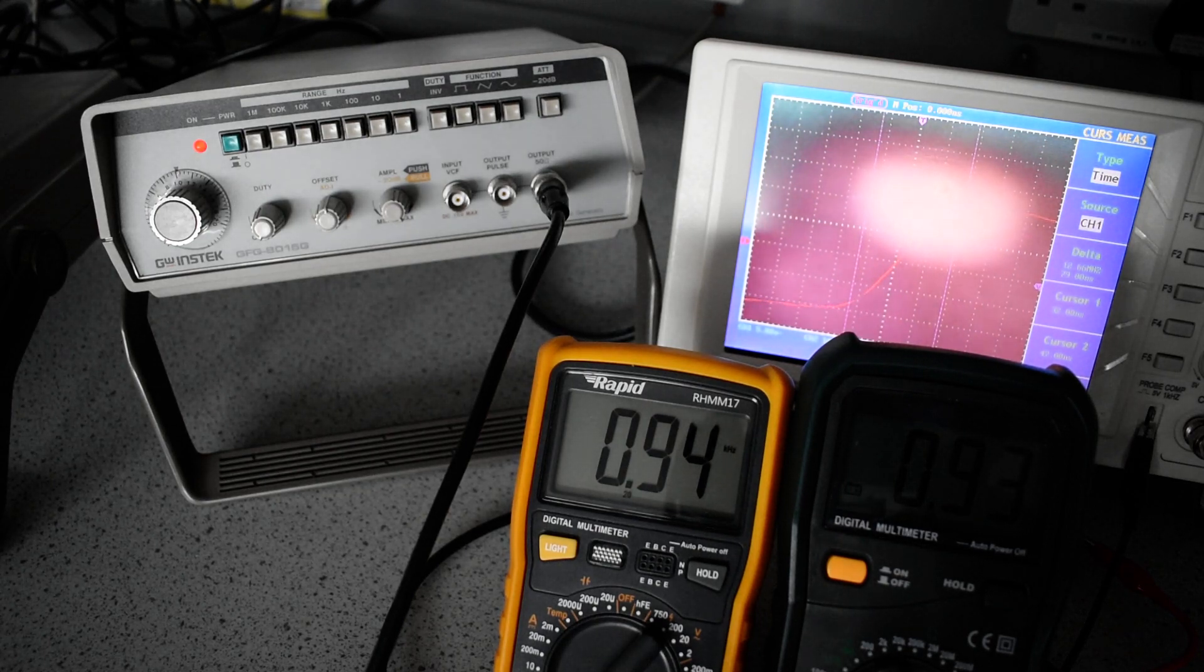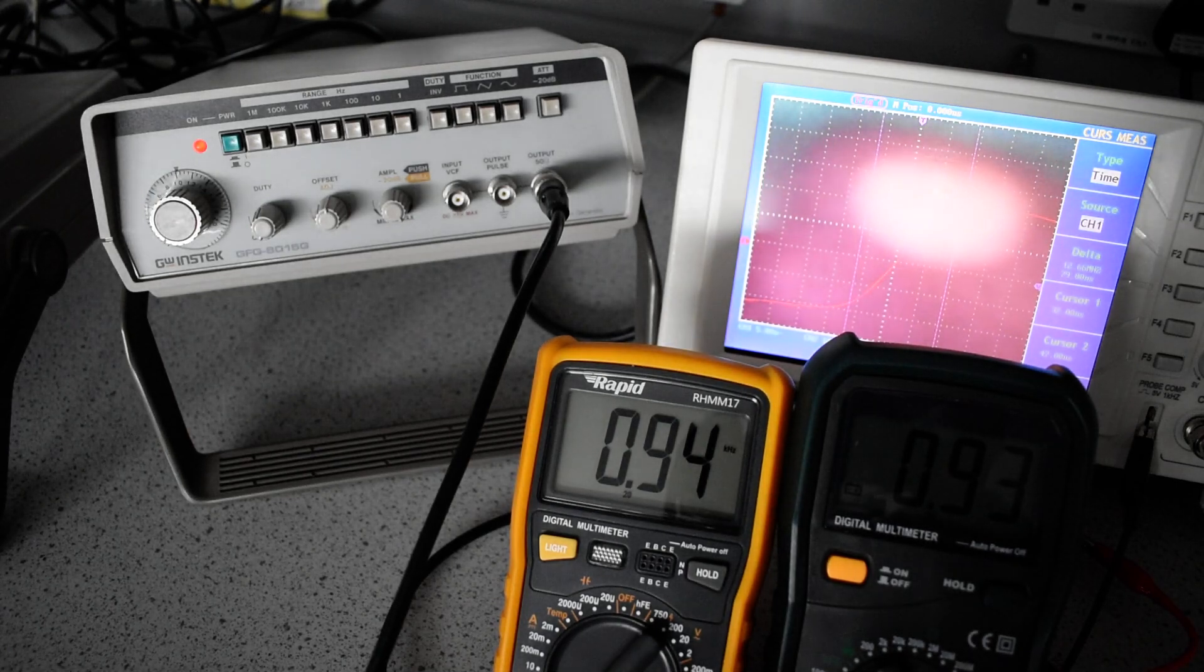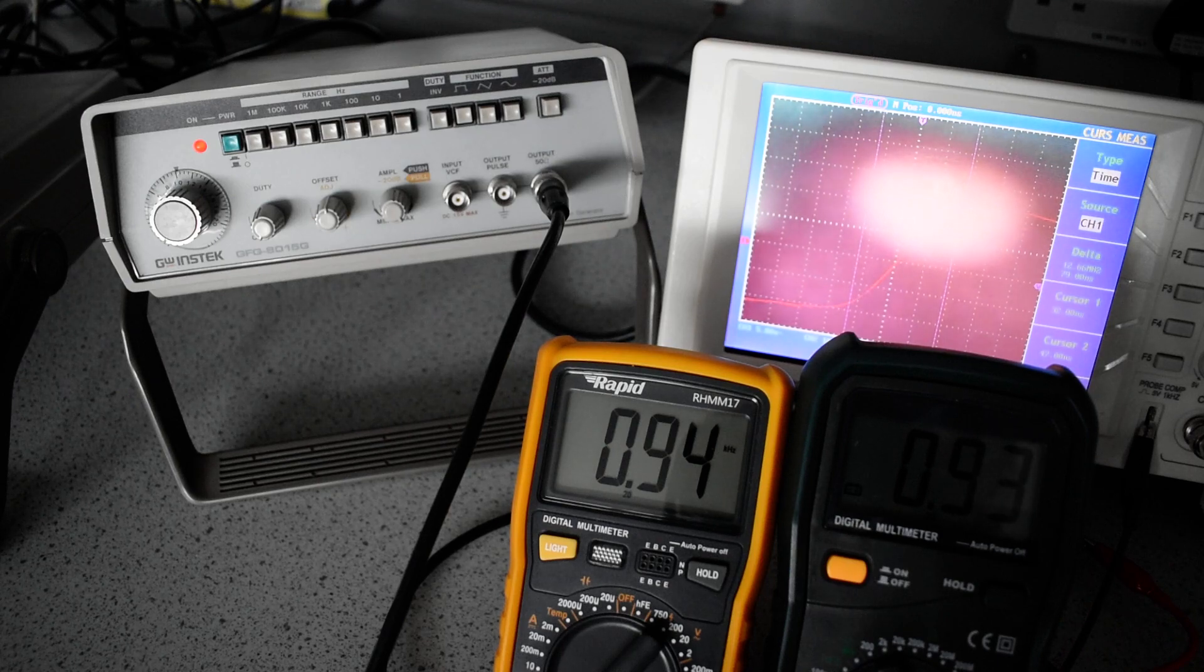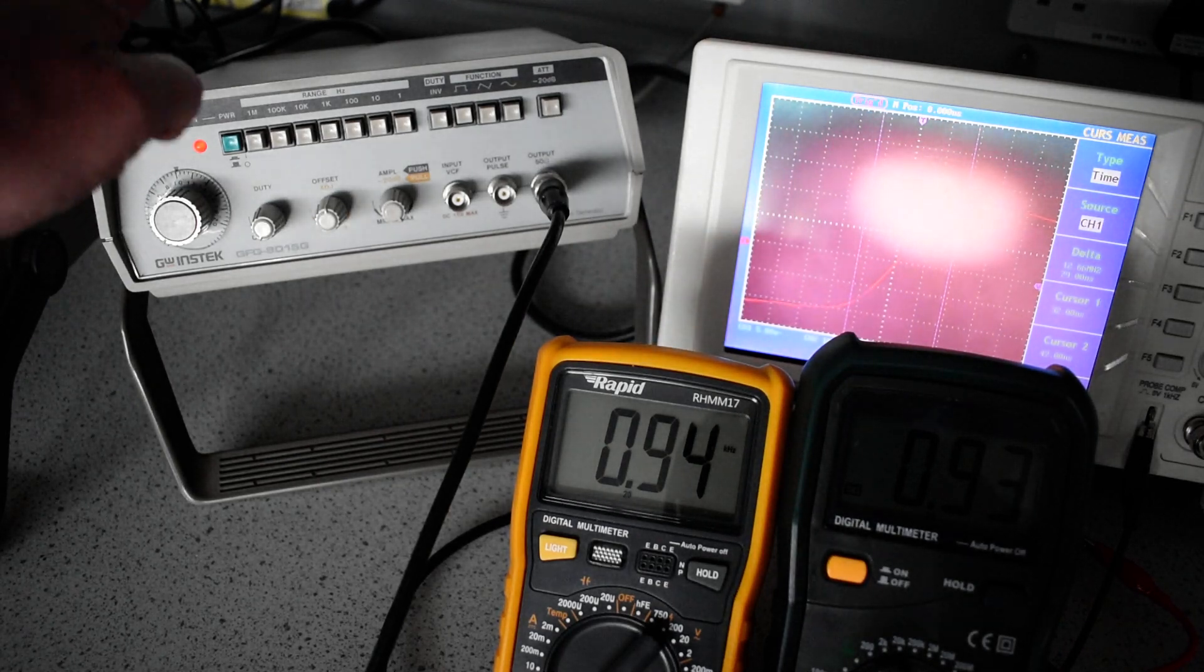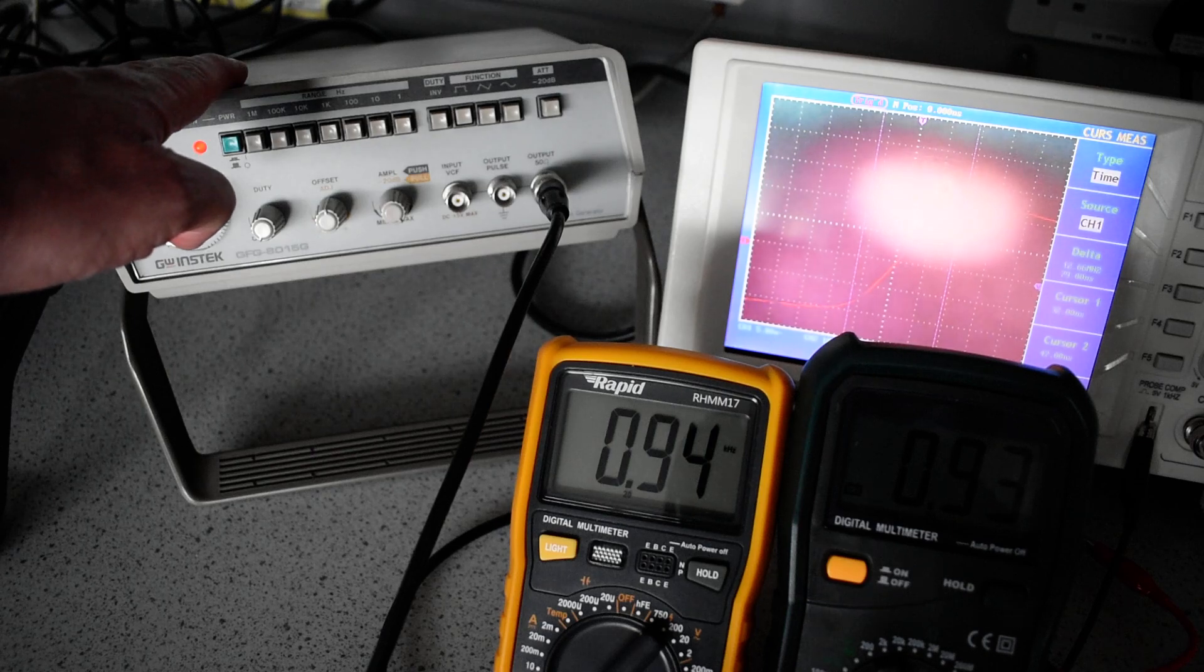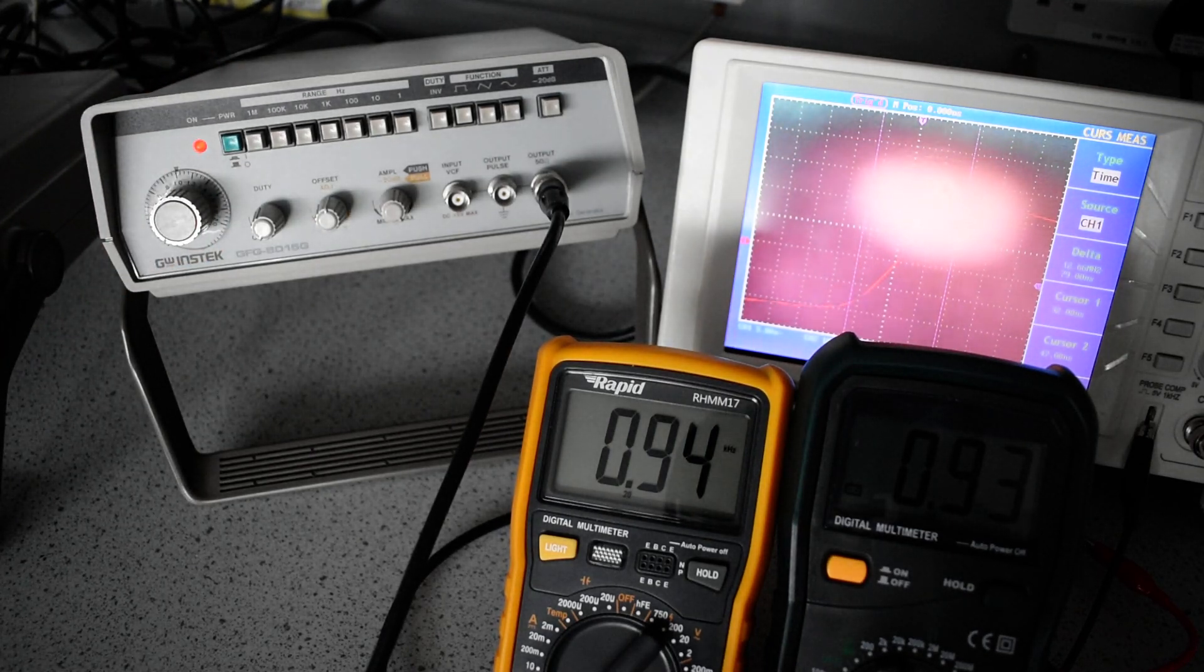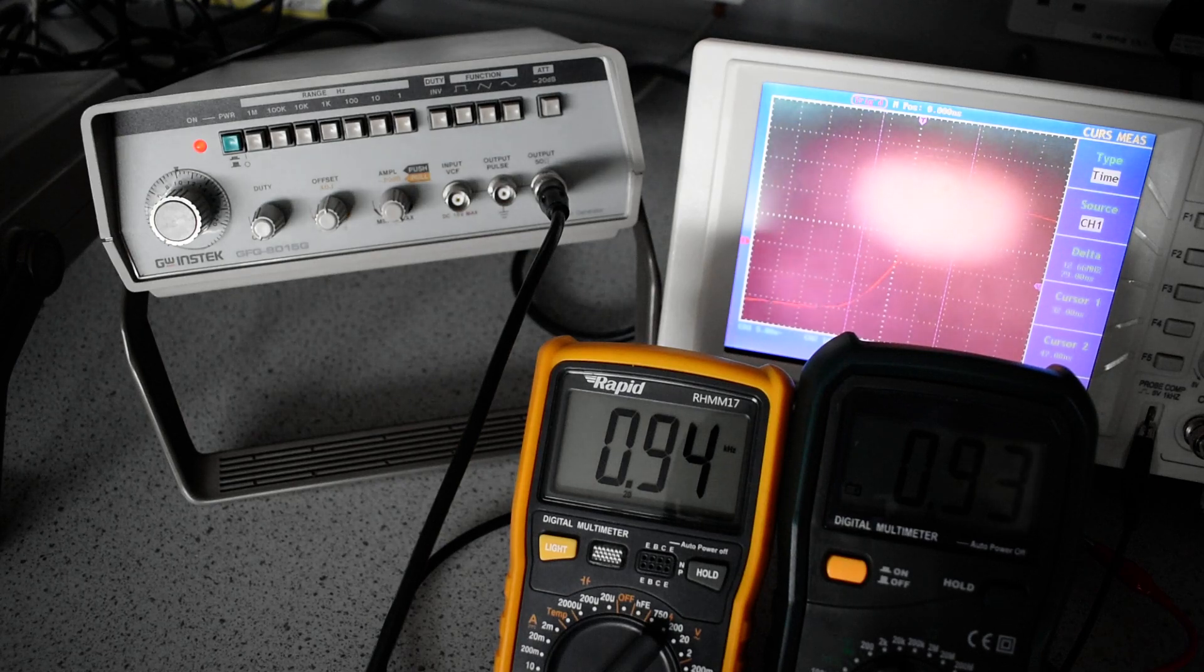So, the summary of this calibration demonstration is we've measured the amplitude and output frequency of two different signal generator boxes. This one is out of specification, not fit for purpose. The first one we did was still within specification. Thank you.